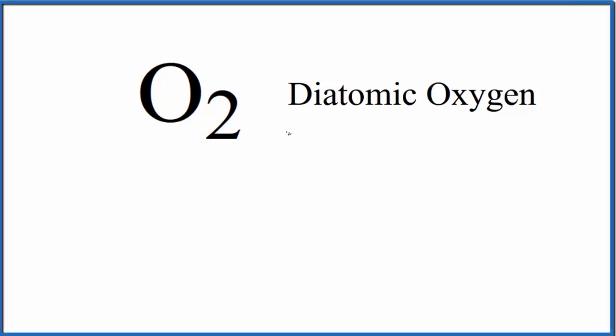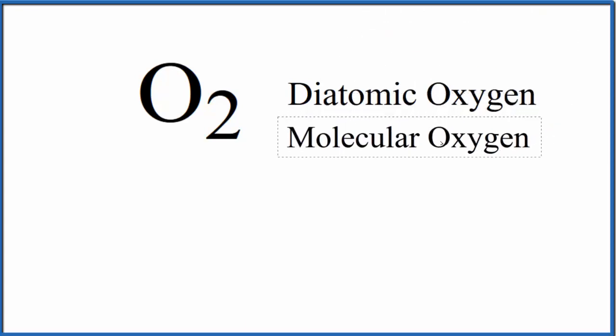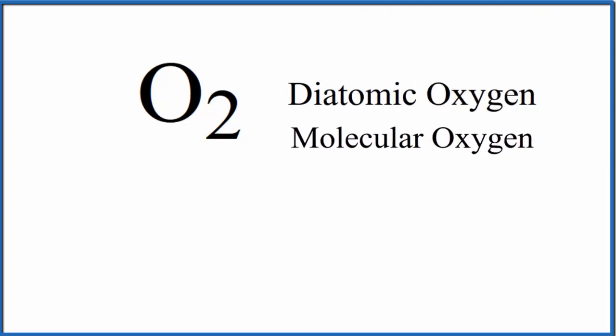In this video we'll write the Lewis structure for diatomic oxygen, also called molecular oxygen or oxygen gas. The first thing we need to do is figure out the number of valence electrons for this O2.